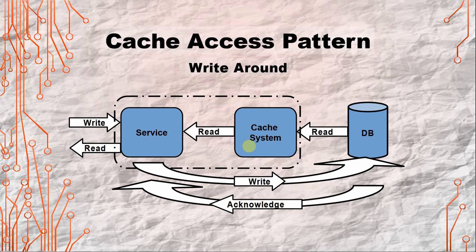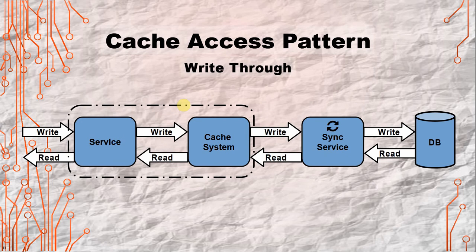Write-around: you are always writing directly to the database and handling the acknowledgement, choosing when to read from the cache. All the information goes directly to the database, so the cache system is used more for reading than anything else. Write-back: the service talks to the cache system back and forth, and a separate service takes care of synchronizing the database and the cache system so they match.